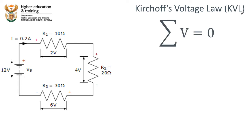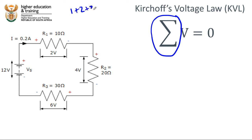The mathematical statement of Kirchhoff's voltage law looks like this. This symbol over here is a Greek letter and we use it to mean the sum — it could be a sum of any values. What this is saying is that the sum of all the voltages in a closed loop circuit is equal to zero.